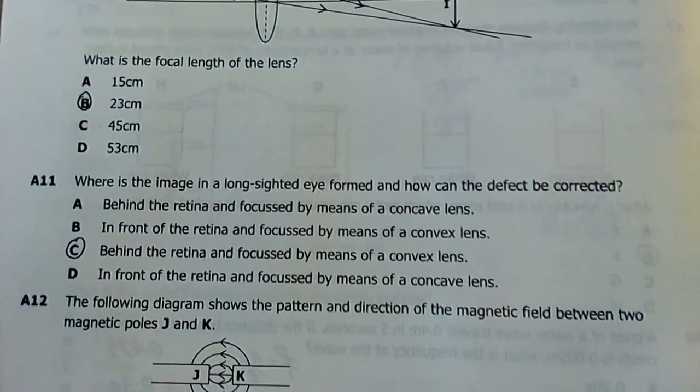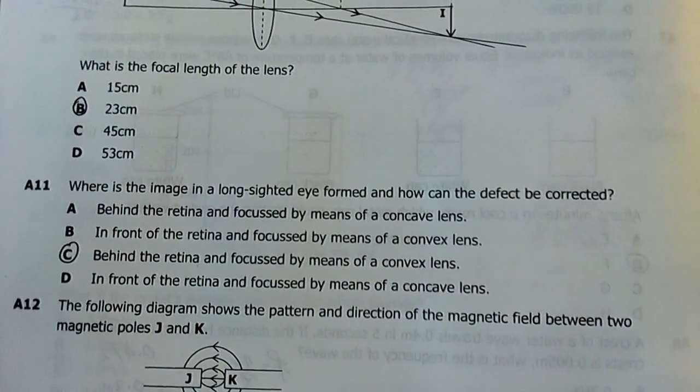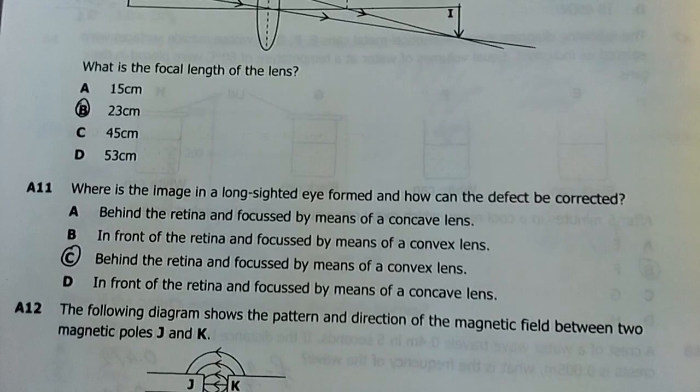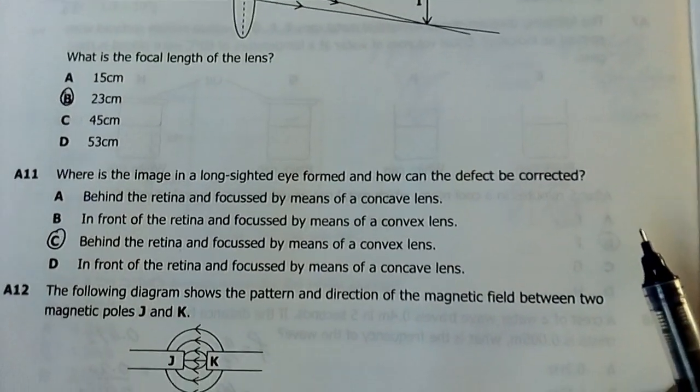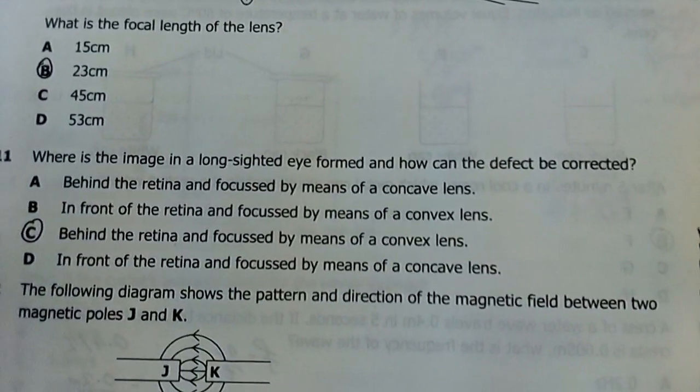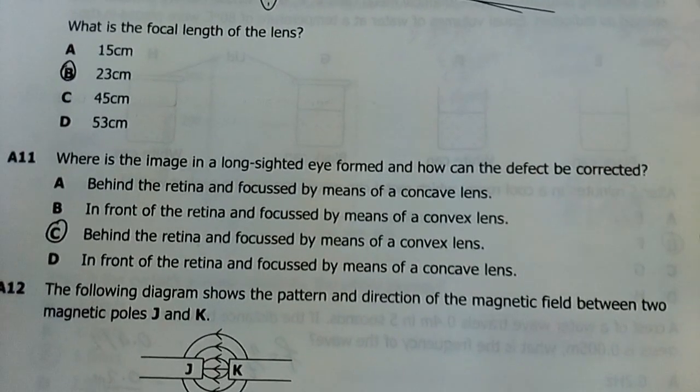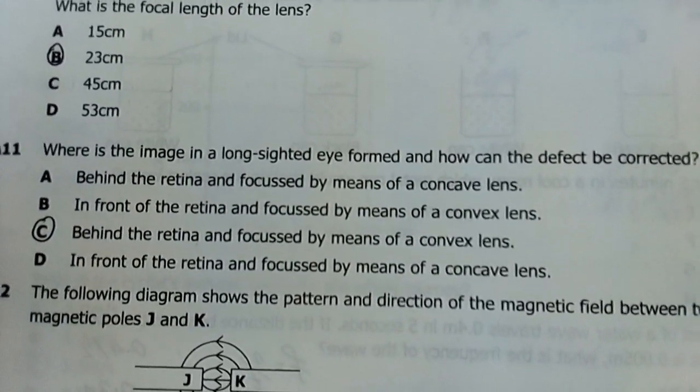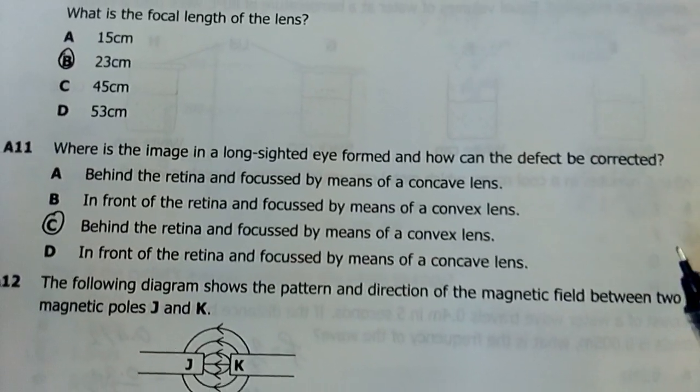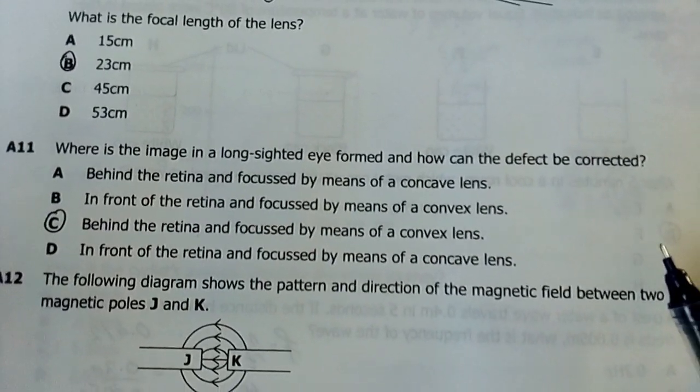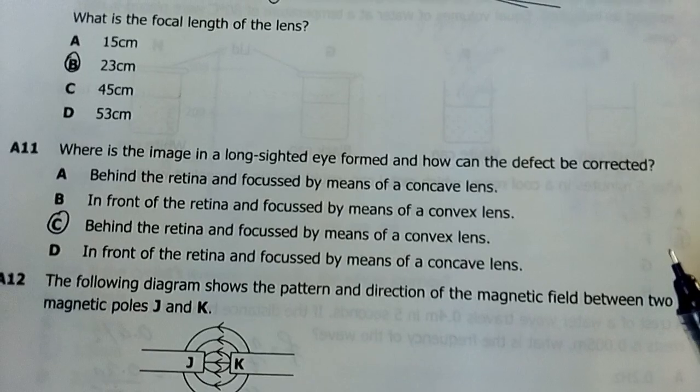Number 11: Where is the image in the long-sighted eye formed and how can the defect be corrected? My answer was: behind the retina and corrected by means of a convex lens. Long-sightedness is caused by a weak lens or a small eyeball, and can be corrected by a convex lens.